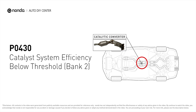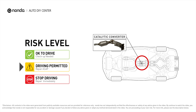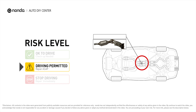P0430 means your catalyst system efficiency is below threshold near engine bank 2, which indicates that the catalytic converter is not functioning efficiently, so the vehicle is increasing the output of harmful pollutants. Under this circumstance, short distance driving is permitted, but your vehicle should be repaired as soon as possible.